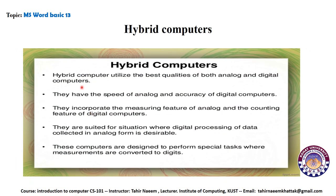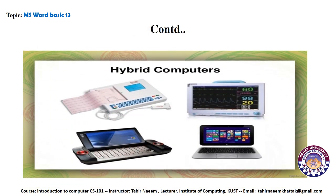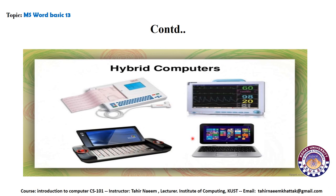Hybrid computers utilize the best qualities of both analog and digital computers. They hold the speed of analog and the accuracy of digital computers. They incorporate the measuring feature of analog and the counting features of digital computers. They are suited for situations where digital processing of data controlled in analog form is desirable, and are designed for specific tasks where measurements are converted into digits. Here you can see a typical example of a hybrid computer.